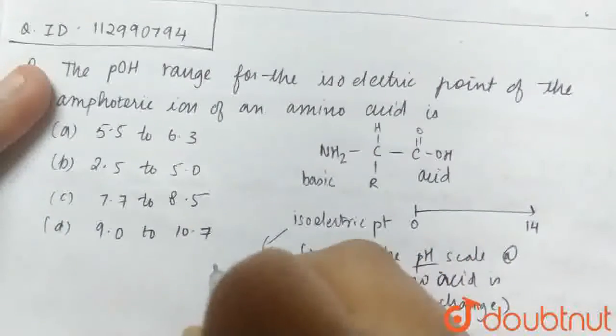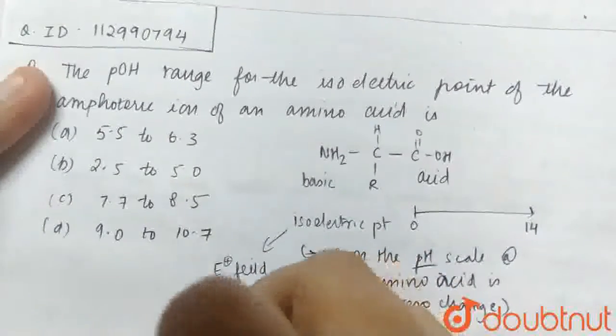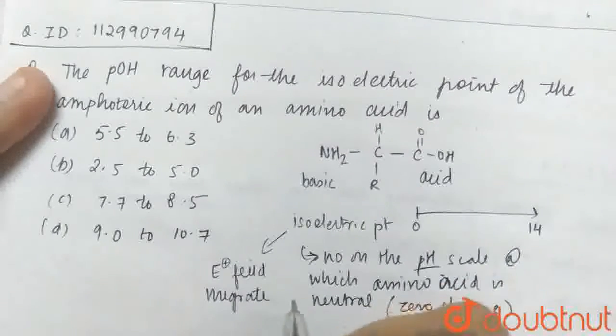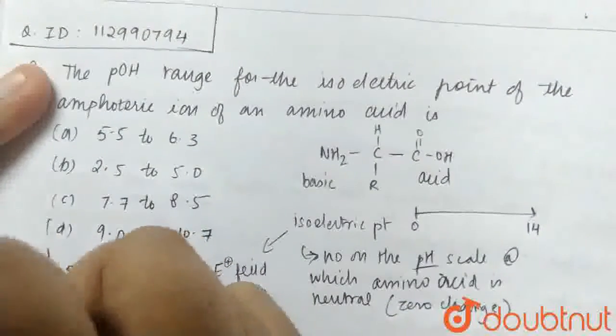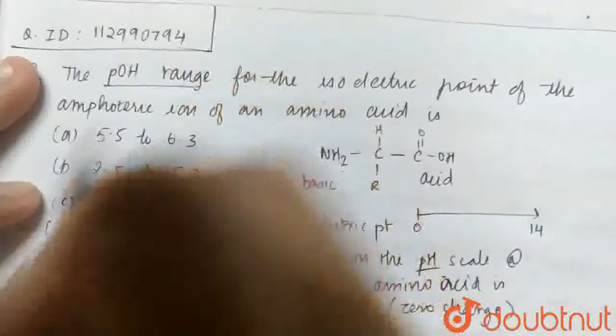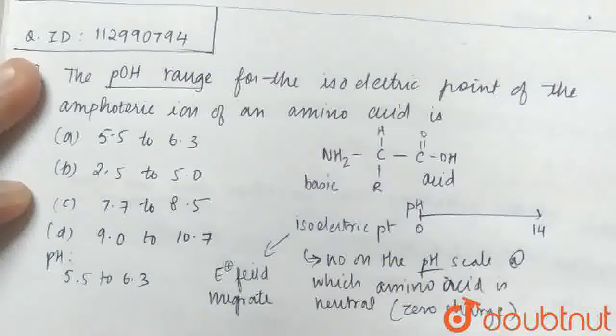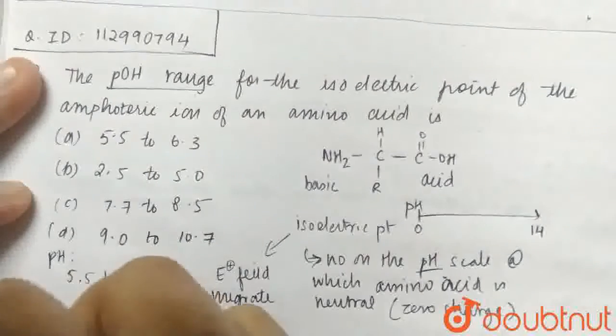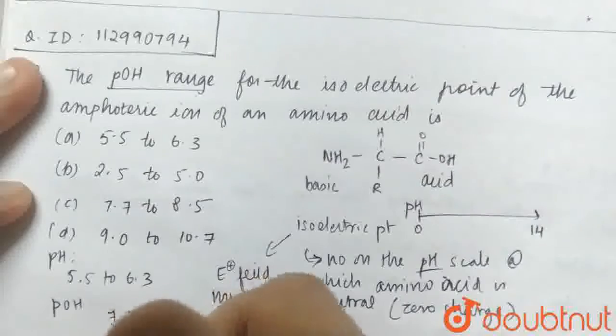If you know that pH range is 0 to 14, and if you calculate the pH range here, the pH range is 7.7 to 8.5.